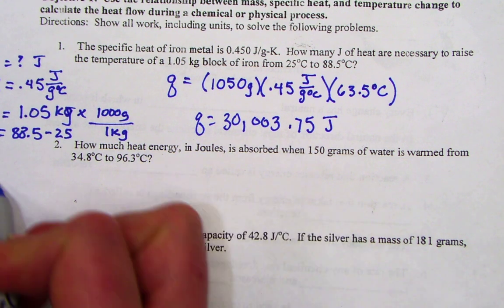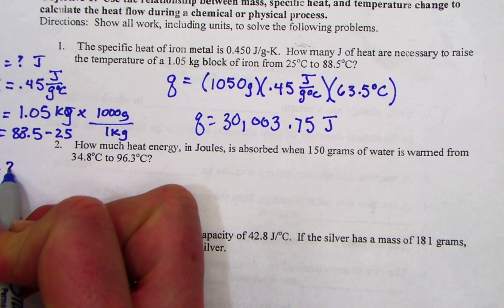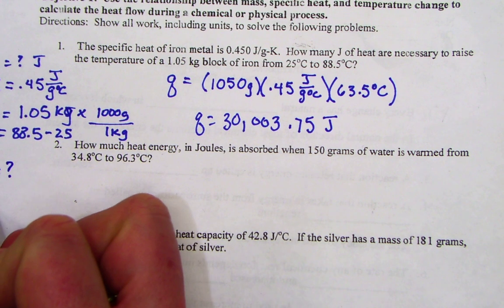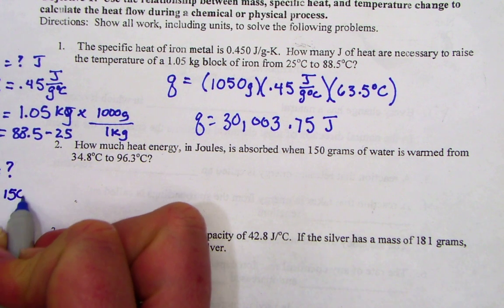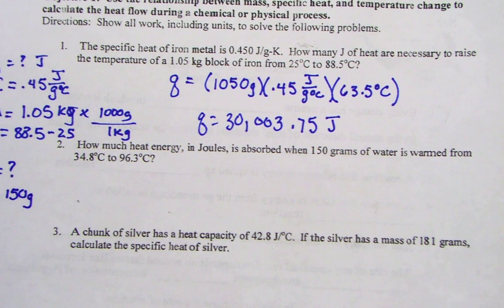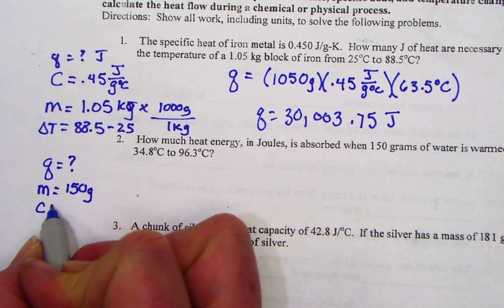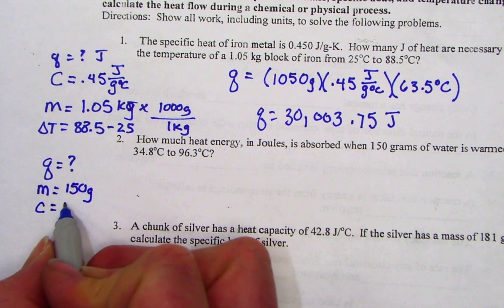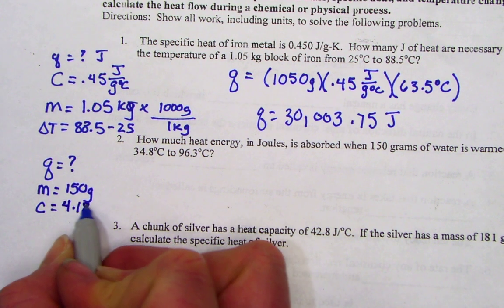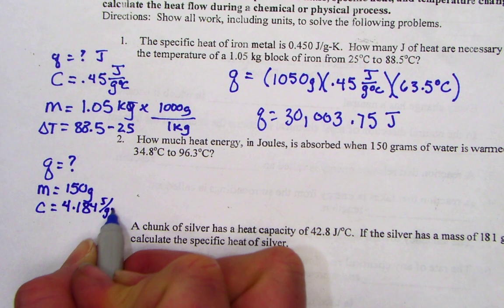Again, we're being asked to solve for Q, that's our target variable. Our M stands for mass, given to us as 150 grams. The C, specific heat for water, is a constant we have memorized to be 4.184 joules per gram degrees Celsius.